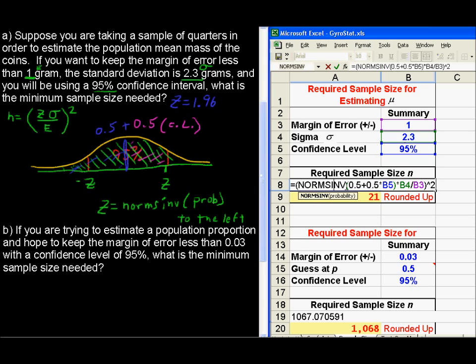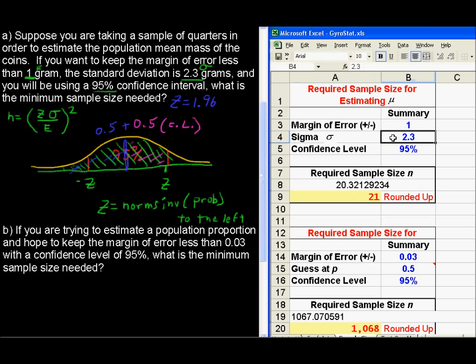NORMSINV, this is what we have. I showed you the 0.5 plus the 0.5 times. I called this cell B5, and that is the confidence level. I've got it set to a percent there. I can certainly change that to 0.95 as the confidence level, but I've got it coded in as a percent in Excel.